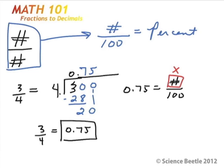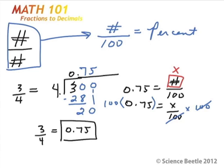We've got 0.75 equal to x divided by one hundred. To solve for x, we multiply both sides by one hundred. The hundreds on the right-hand side cancel, and 0.75 times one hundred gives us seventy-five. So 0.75 is equal to seventy-five percent.